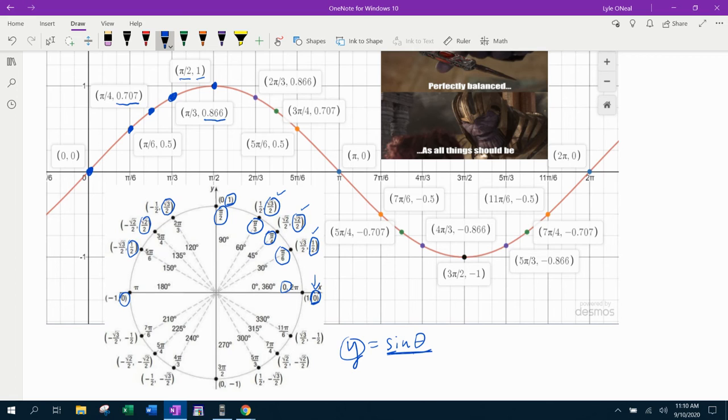So if we keep going around the unit circle, at 2π/3, we're going to hit, we're starting to go back down. And at 3π/4 and at 5π/6, we keep decreasing until we get to π, where we're back at 0.